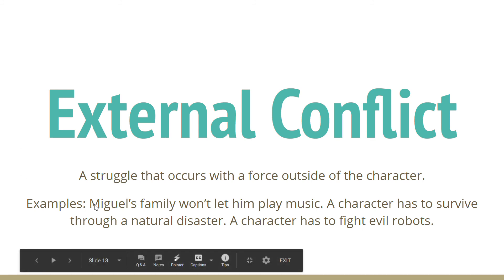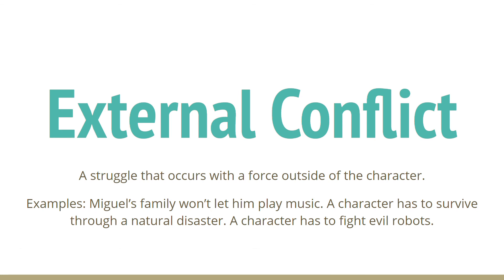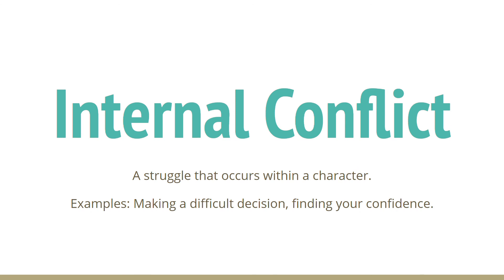In Coco, the external conflict is between Miguel and his family — his family won't let him play music. Another example of external conflict could be a character surviving a tornado, where the conflict is between the character and nature. A third example could be a character having to fix a refrigerator — the conflict is between the character and an inanimate object.